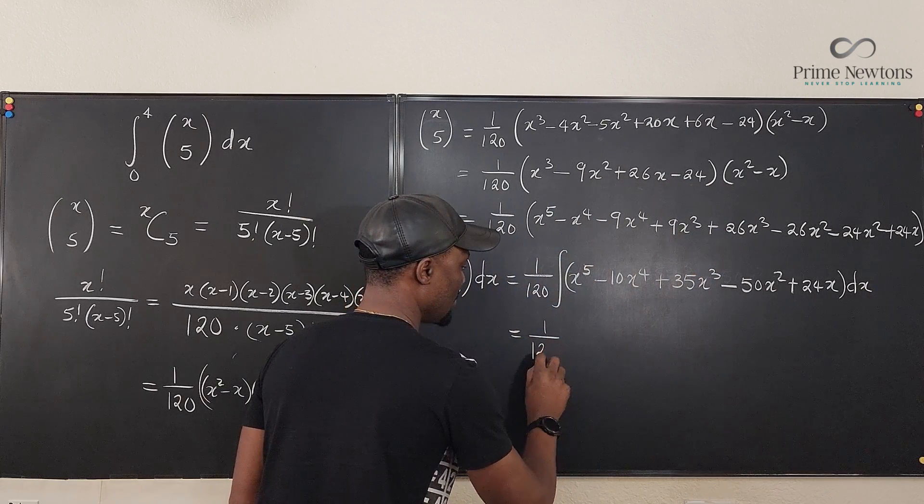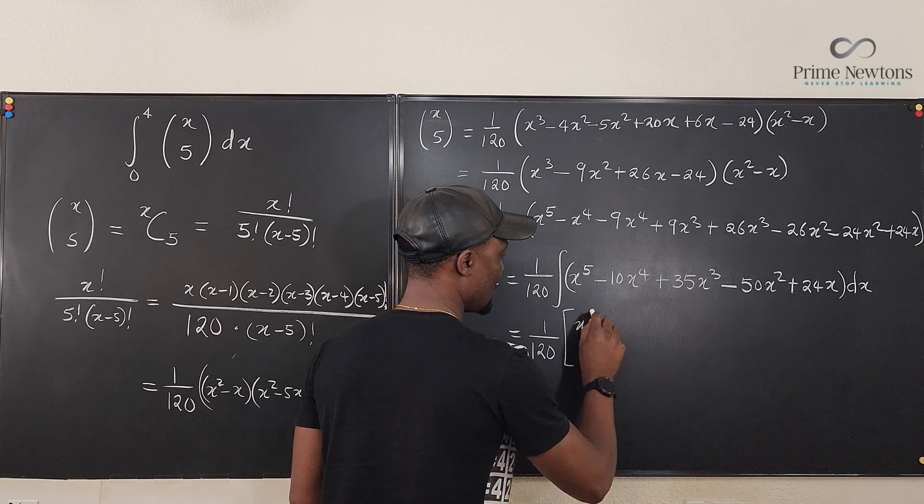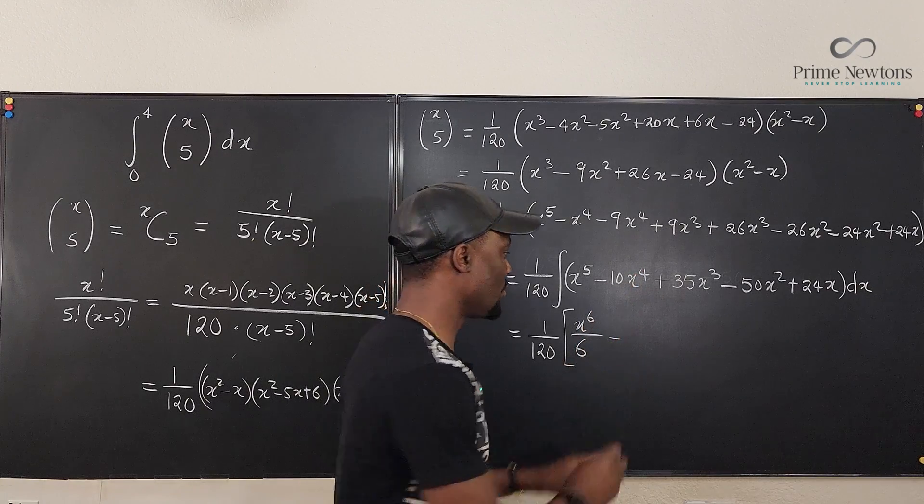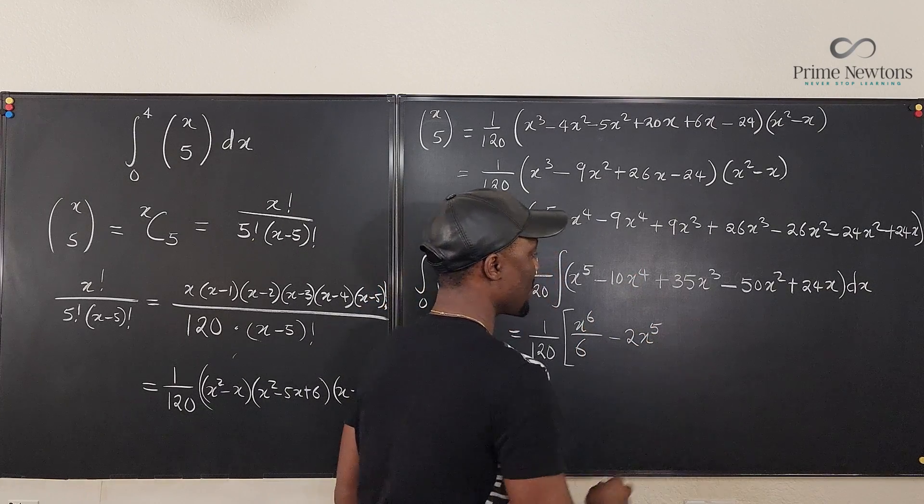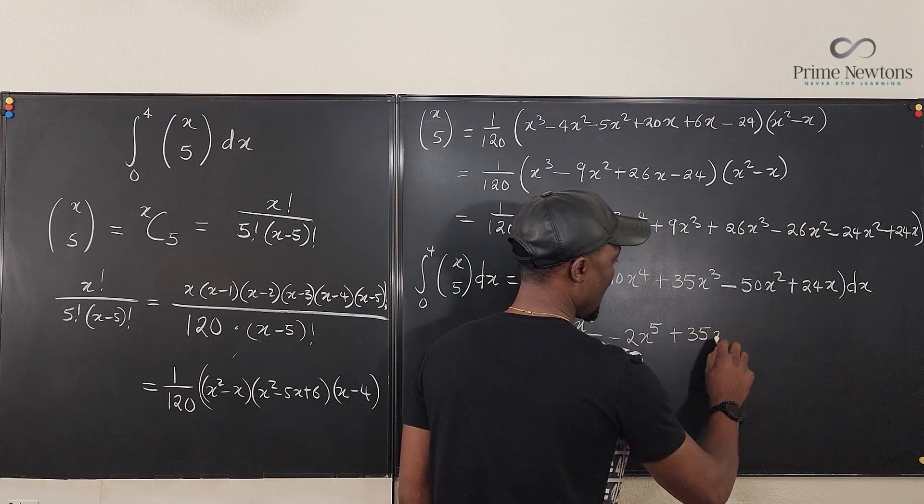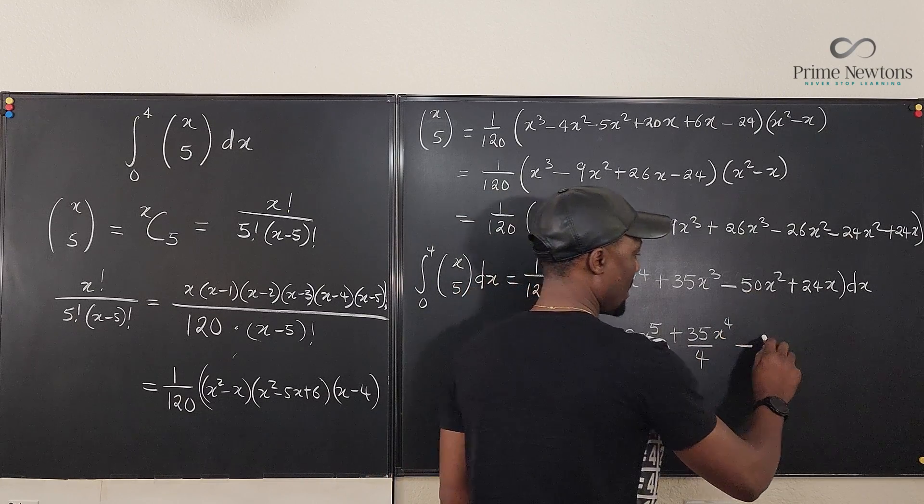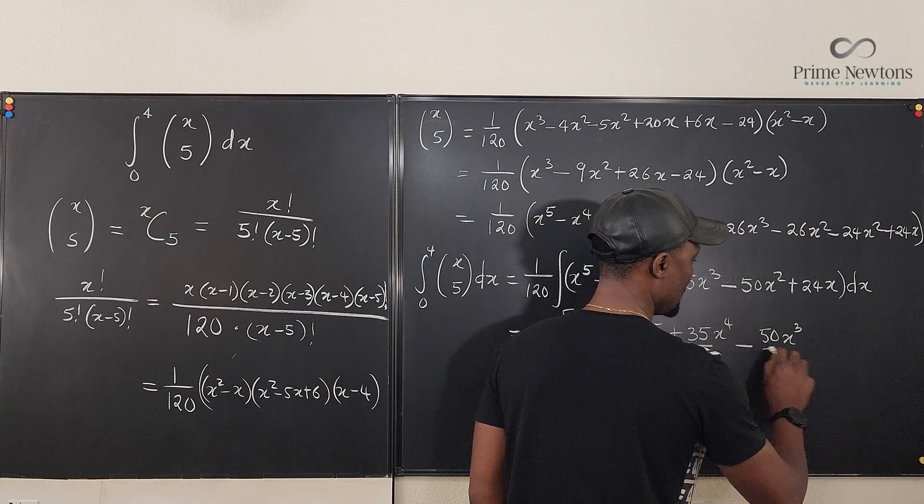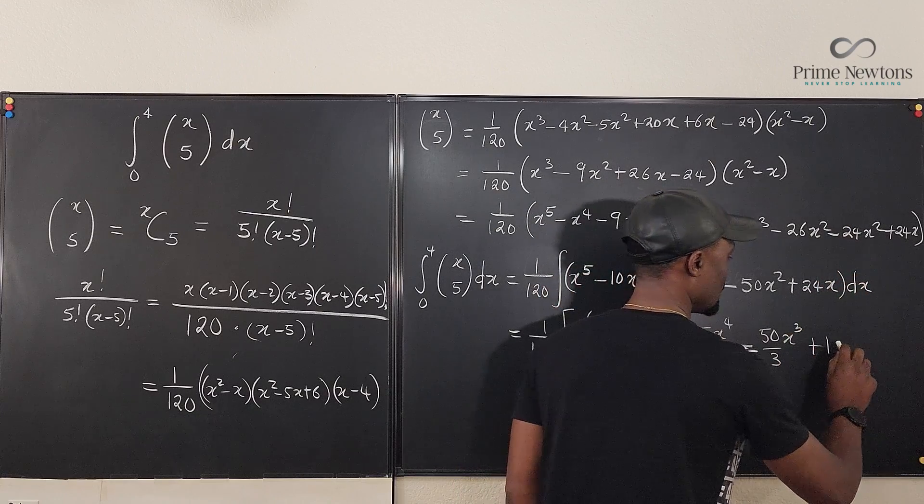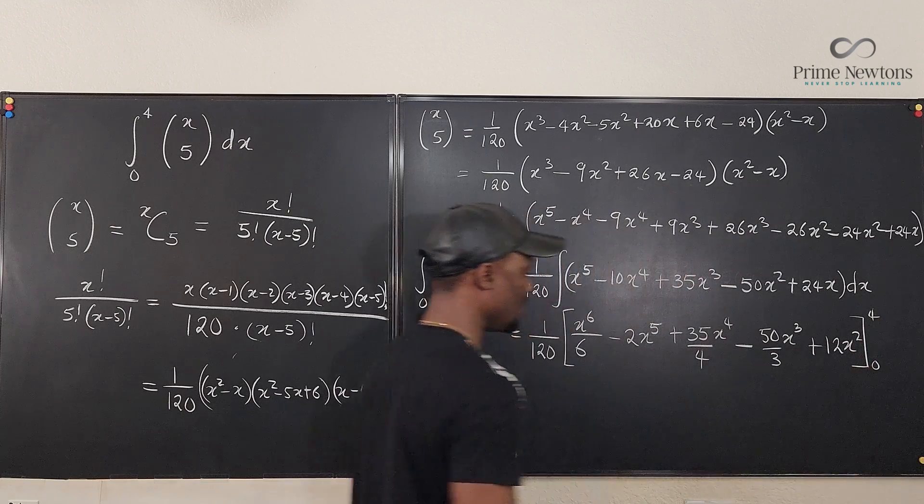Okay, so this is going to be 1 over 120. And the integral of this is going to be, let's do this. So this is going to be x to the sixth over 6 minus 10x to the fifth over 5, which is going to make this just 2x to the fifth. Okay. And this is going to be plus 35x to the fourth over 4. And this is going to be minus 50x cubed over 3. And this is B plus 24x squared over 2, which is just 12x squared. And we're going to evaluate from zero to four.